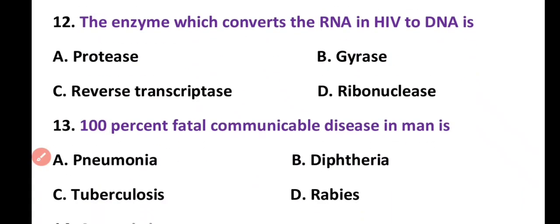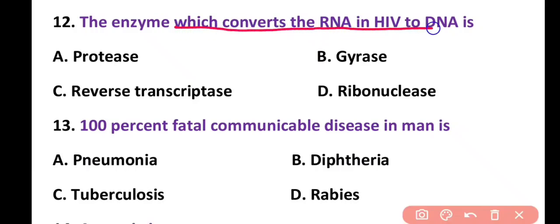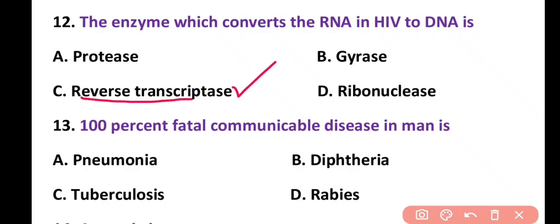Question 12. Enzyme which converts the RNA in HIV into DNA is: protease, gyrase, reverse transcriptase, or ribonuclease. Correct answer is option C. Reverse transcriptase is present in retroviruses, especially HIV, and it converts the single-stranded RNA into double-stranded DNA.